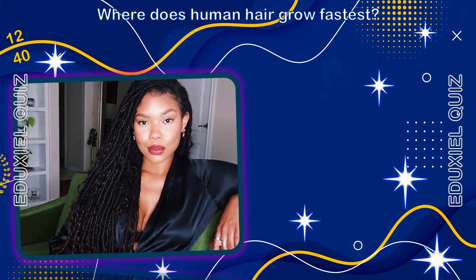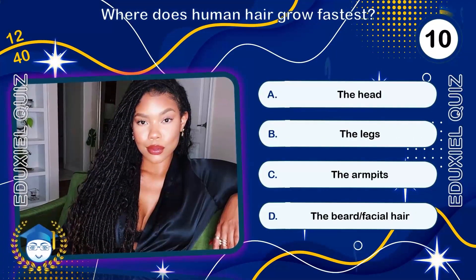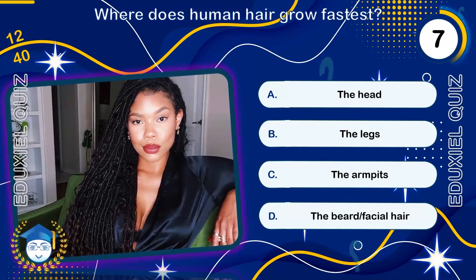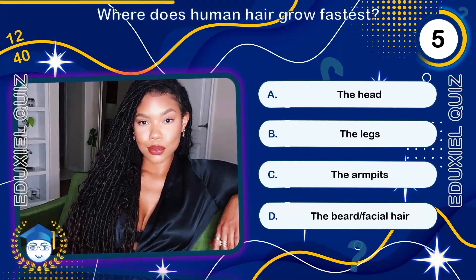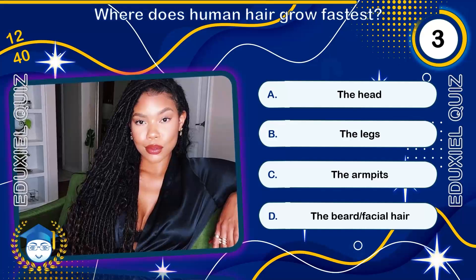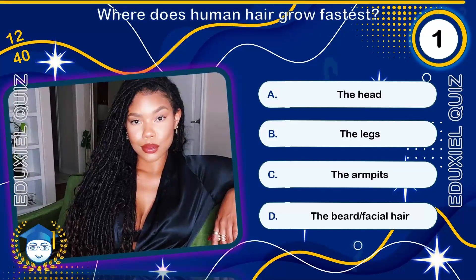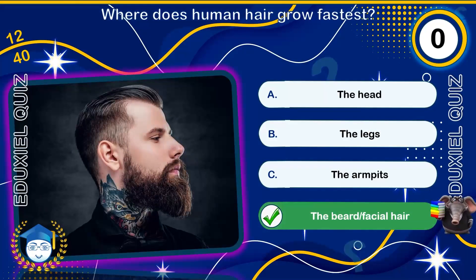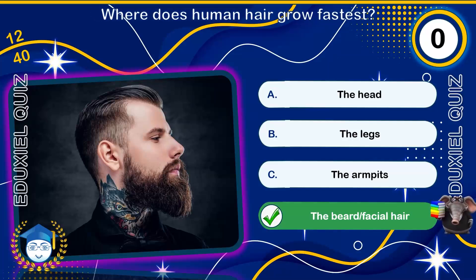Where does human hair grow fastest? The beard and facial hair. Male facial hair tends to grow faster than any other hair on the body.